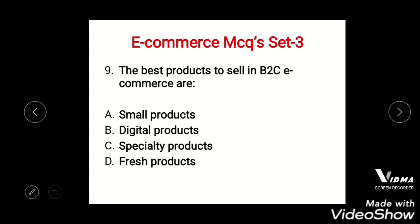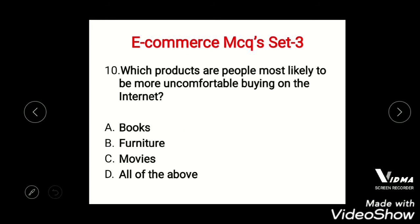Question 9: The best products to sell in B2C e-commerce are: Options: A) Small products, B) Digital products, C) Specialty products, D) Fresh products. The right answer is digital products.